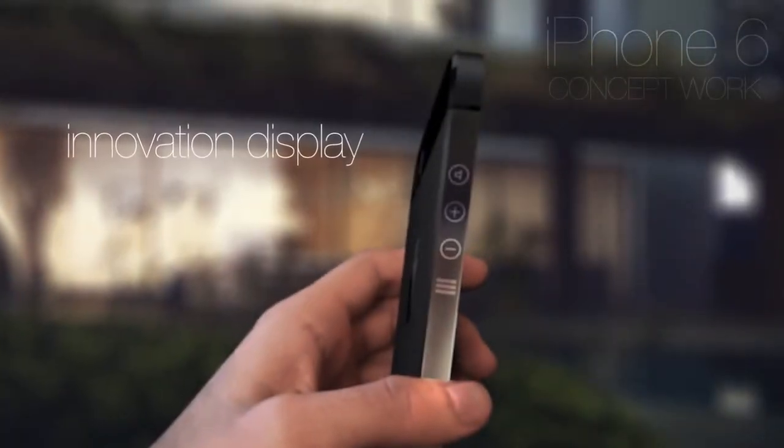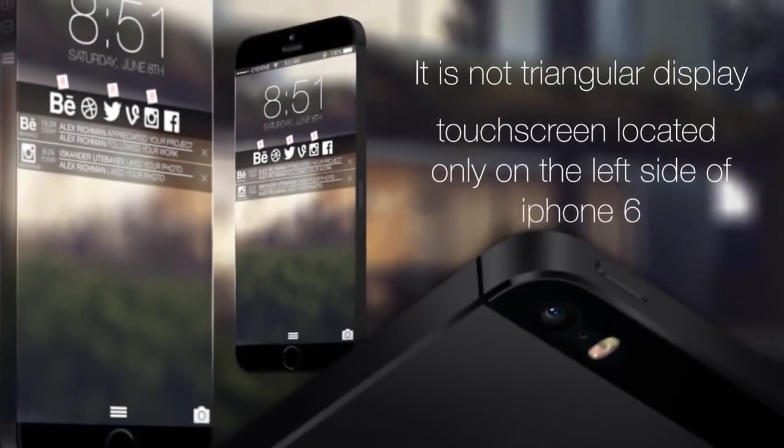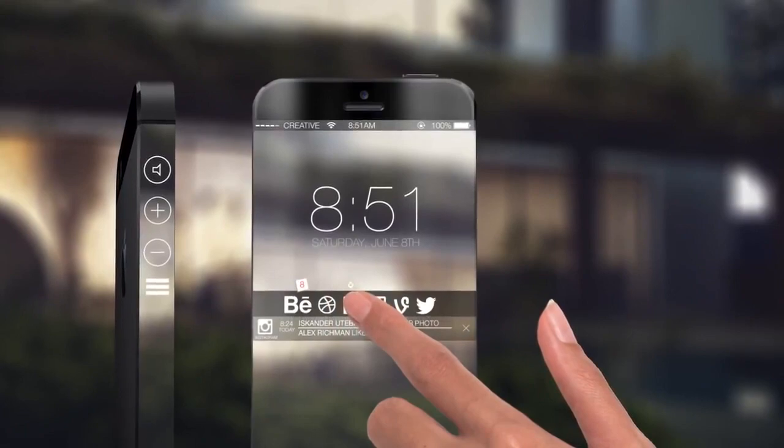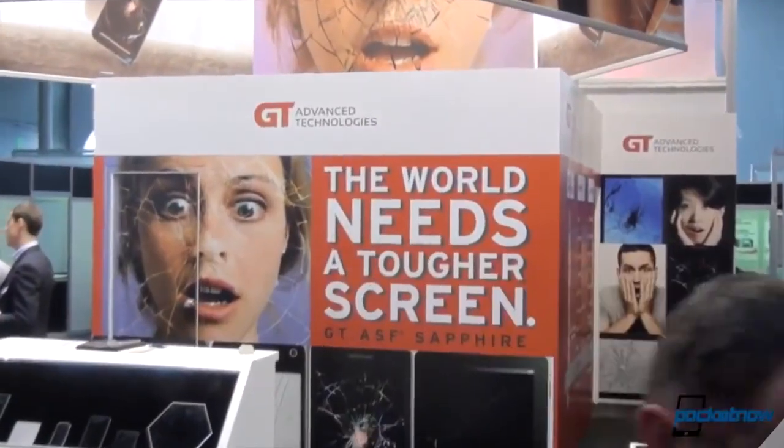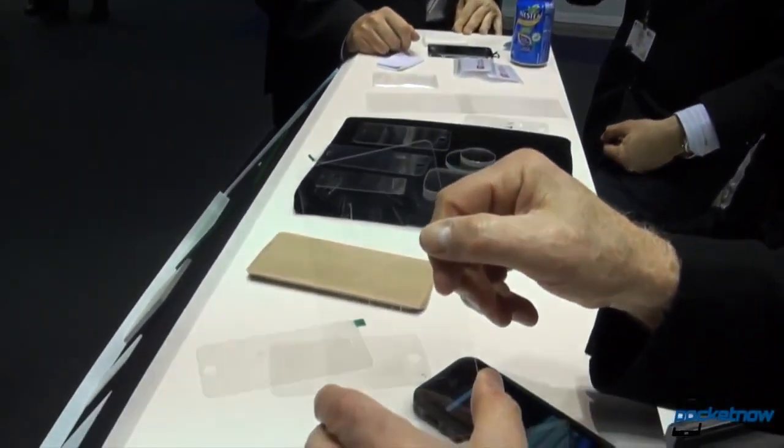Two months ago, Apple ordered a large amount of sapphire screens from a company named GT Advanced Technology. Many experts consider this action as proof that iPhone 6 will come with a sapphire screen.